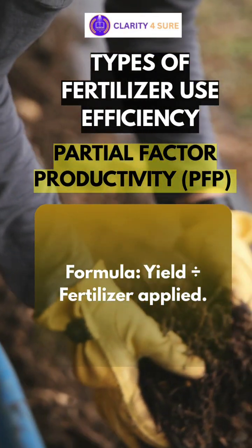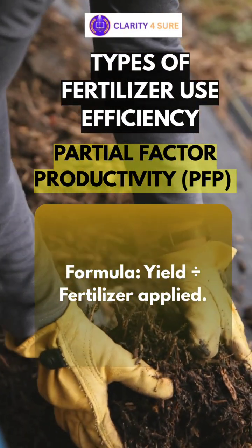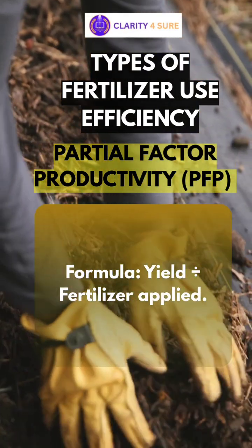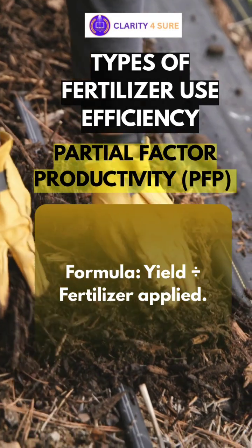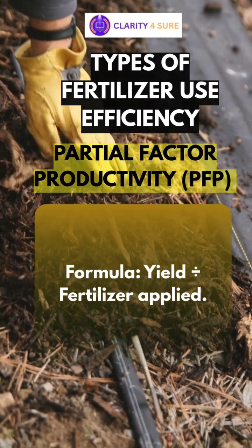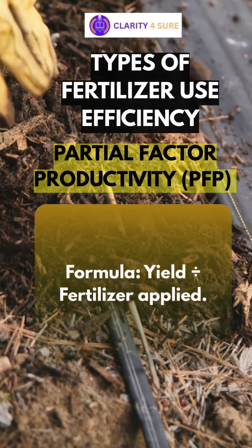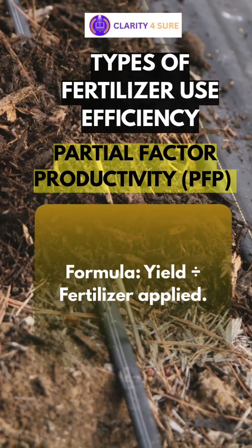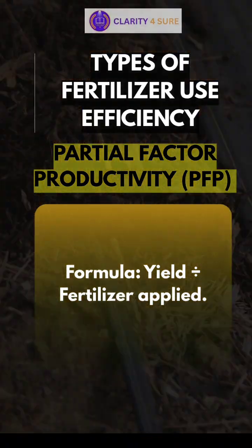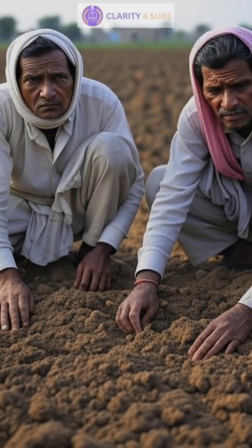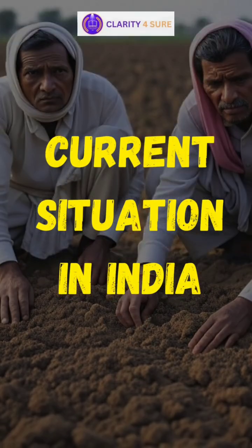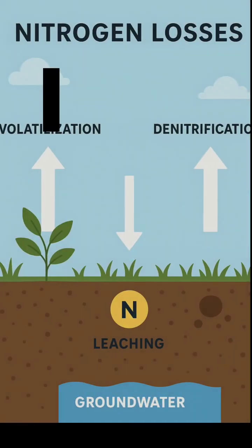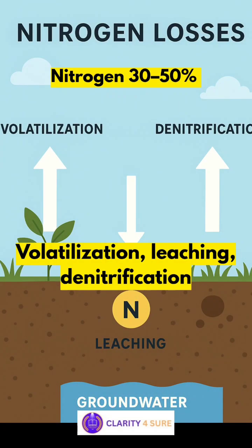The fourth and last type is partial factor productivity. The formula is: yield divided by fertilizer applied. It tells the total yield per kg of nutrient applied, without comparing to a control.